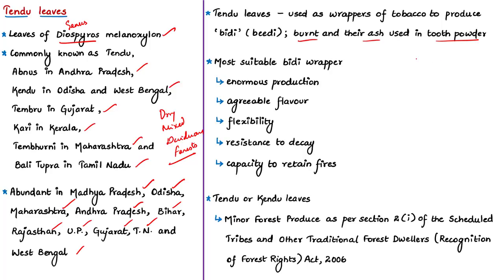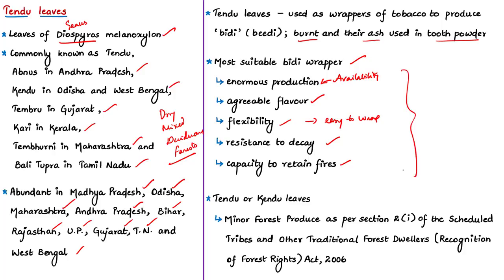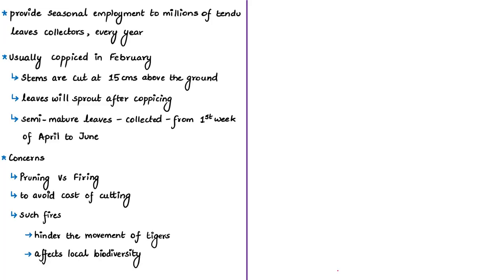The speciality of Tendu leaves is that they are used as wrappers of tobacco to produce Bidi. Disconnected Tendu leaves are also burnt and their ash is used in tooth powder. They are the most suitable Bidi wrapper because they are available across many states enabling huge production, their flavors are agreeable to Bidi users, the leaves are flexible making them easy to wrap, they are resistant to decay, and they have the capacity to retain fire when a Bidi is lit. Tendu leaf is an important non-timber forest produce and a minor forest produce as per Section 2(i) of the Scheduled Tribes and Other Traditional Forest Dwellers' Recognition of Forest Rights Act of 2006. These leaves provide seasonal employment to lakhs of Tendu leaf collectors every year.